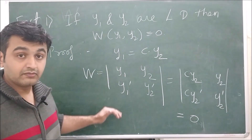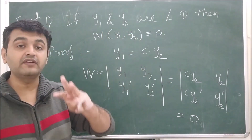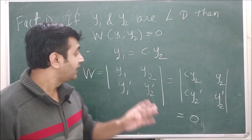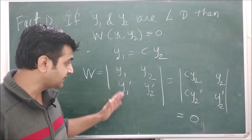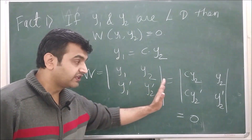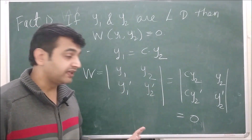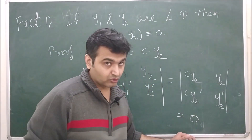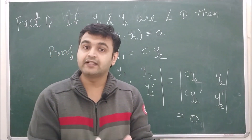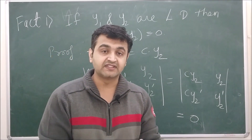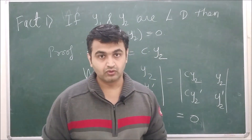The same fact holds for three or more functions: if you have three linearly dependent functions, the Wronskian (determinant of the 3×3 matrix of the functions and their first and second derivatives) is also zero. This is true for n functions as well — linearly dependent functions always have Wronskian zero.